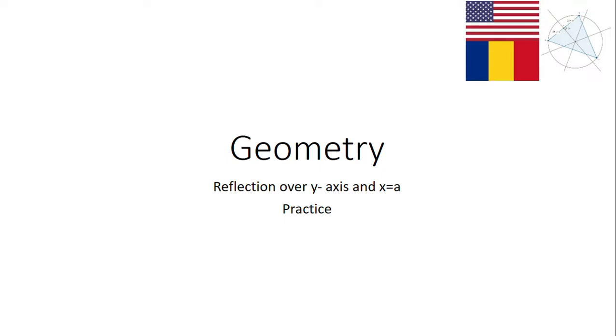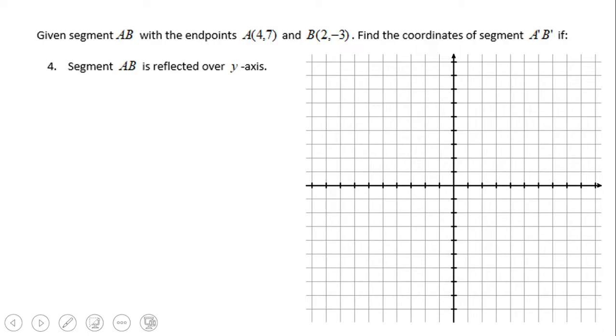Welcome or welcome back on C-square. In this video clip we're going to talk about reflection over y-axis or reflection over lines like x equals a, which are nothing else than vertical lines. So let's see the first example. The first example is talking about reflecting the segment AB with given endpoints over the y-axis.